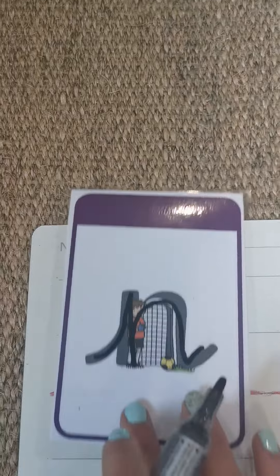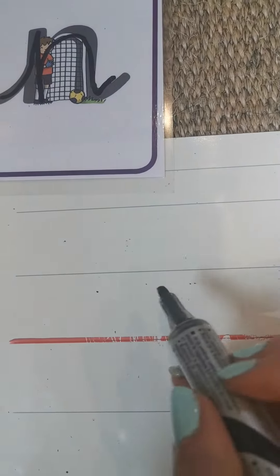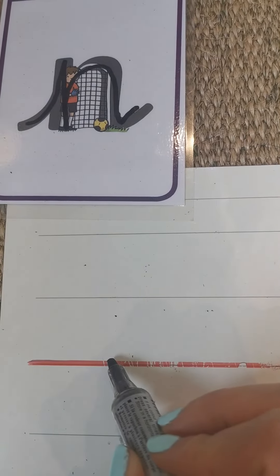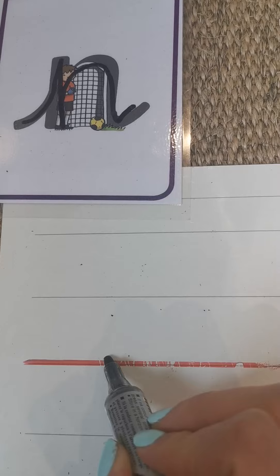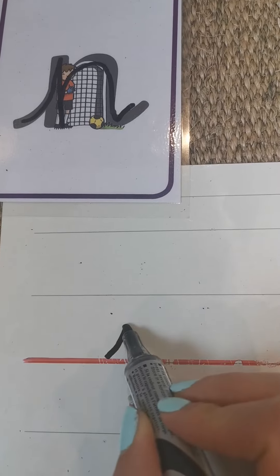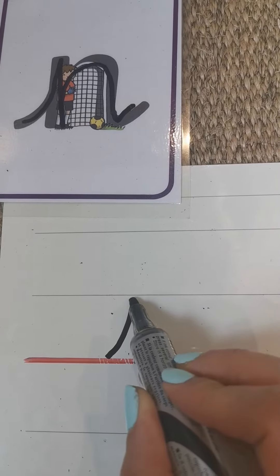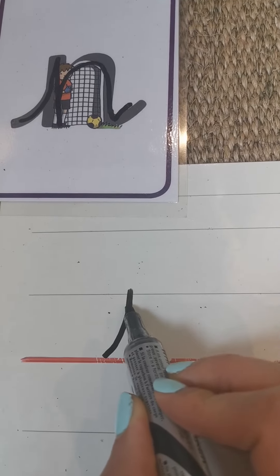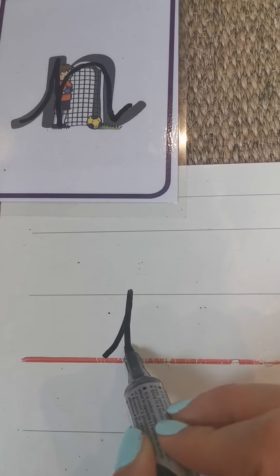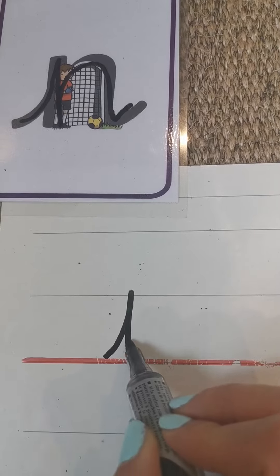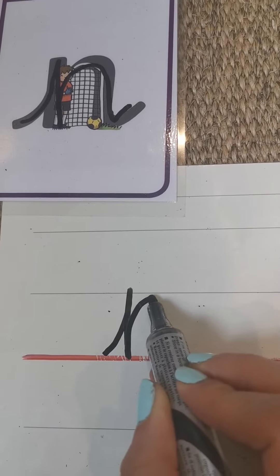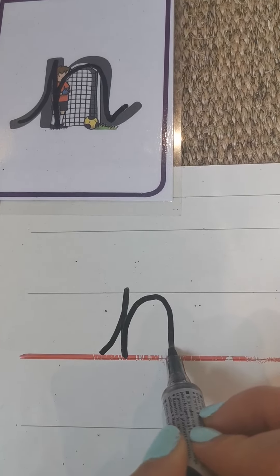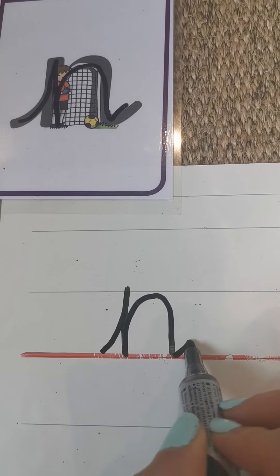Fantastic, so let's try and write that together. Start your n on the line — in we go, and stop, down knobby, and over his net, and out.